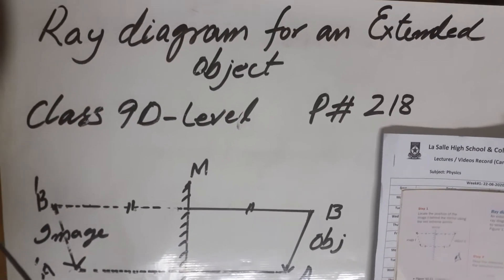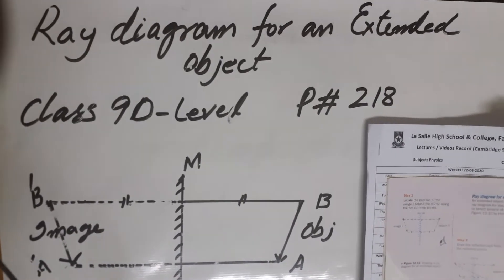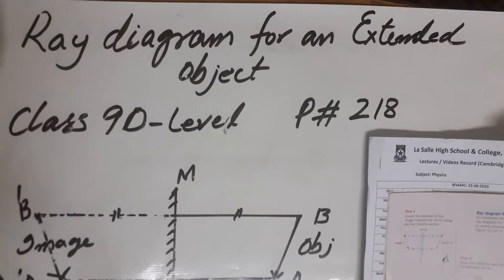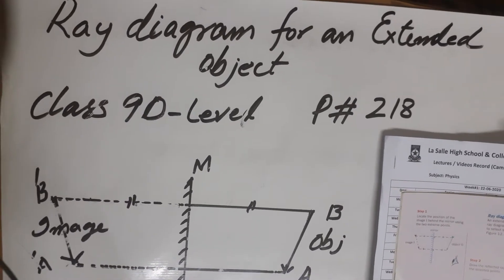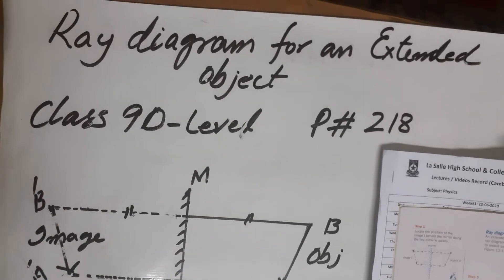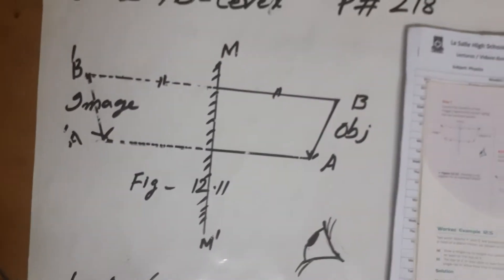Today we are going to learn about the ray diagram for an extended object given on page 218. Now come to the whiteboard.